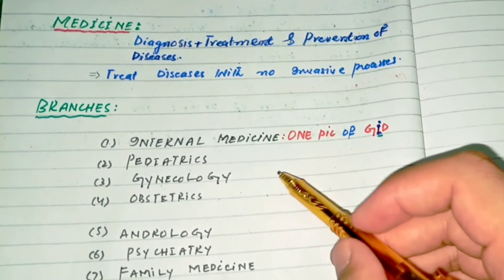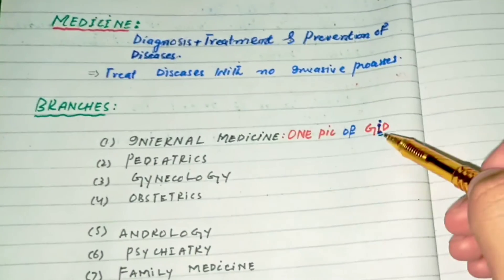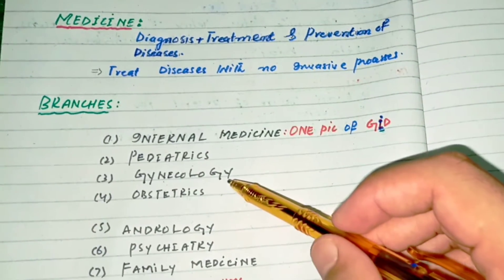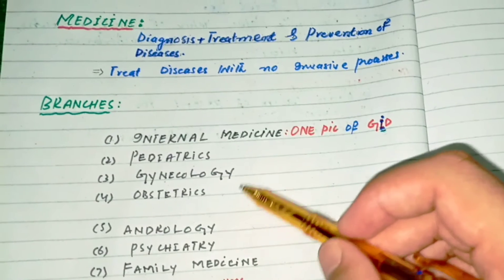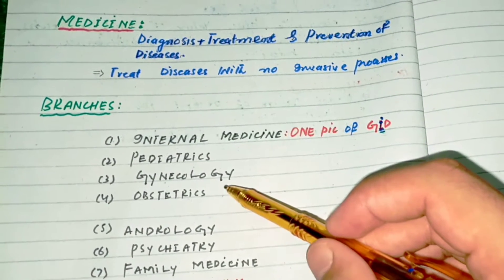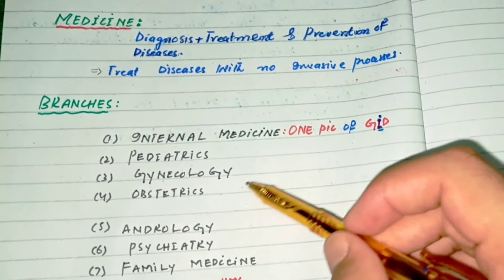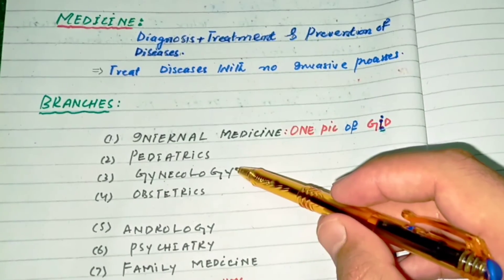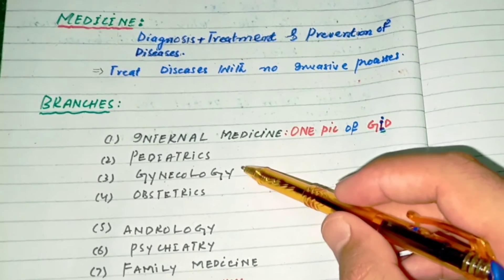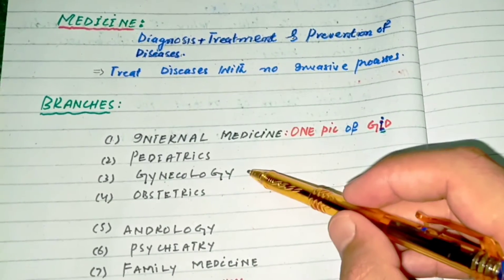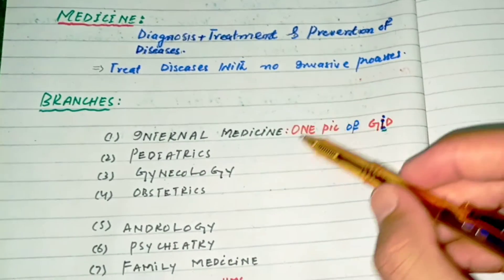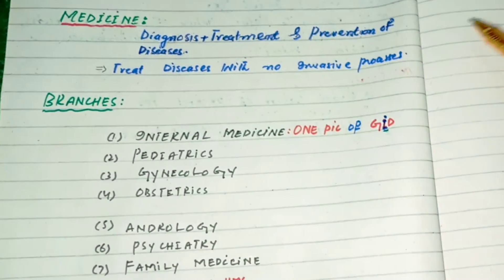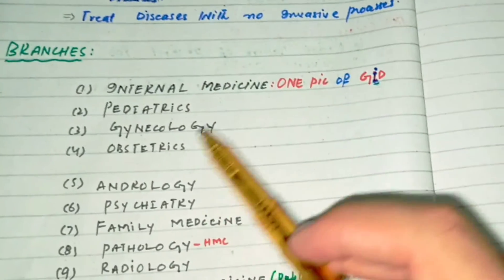In obstetrics, we only study diseases, their diagnosis, treatment, and prevention in pregnant women. In gynecology, we study diseases, their diagnosis, and prevention only in women in general. So obstetrics focuses specifically on pregnant women, while gynecology covers women's health more broadly.